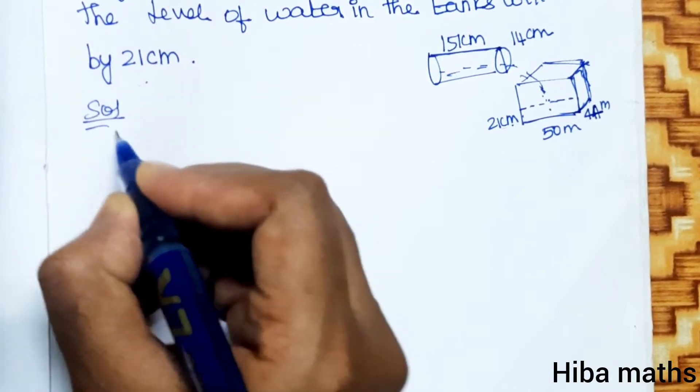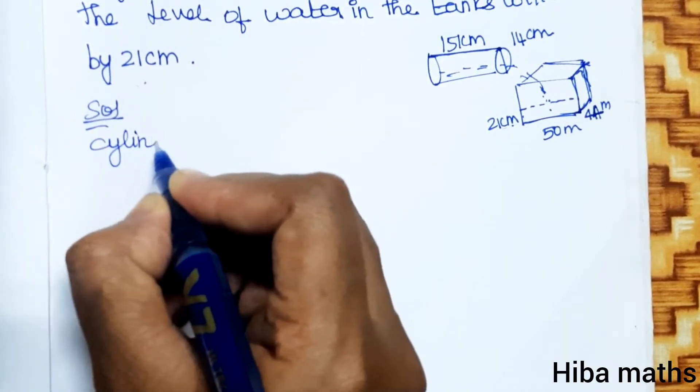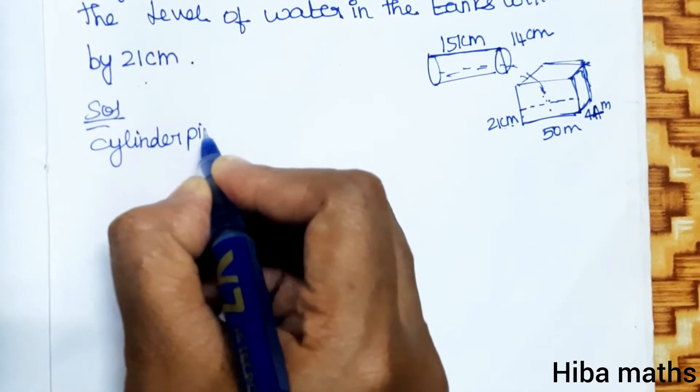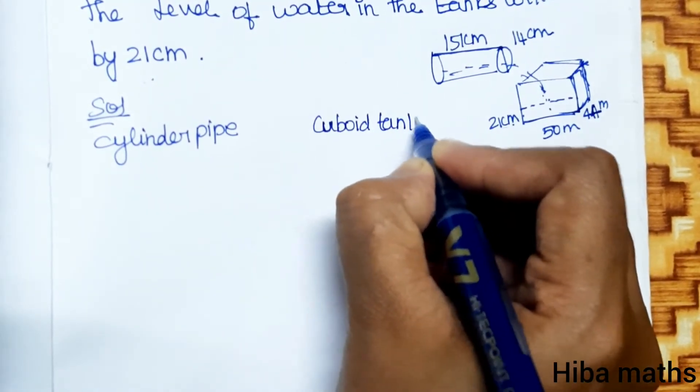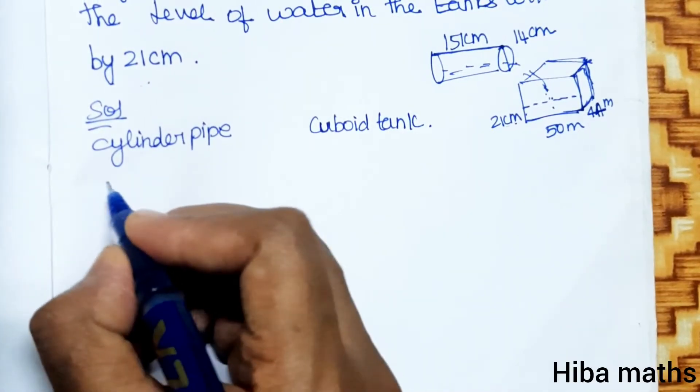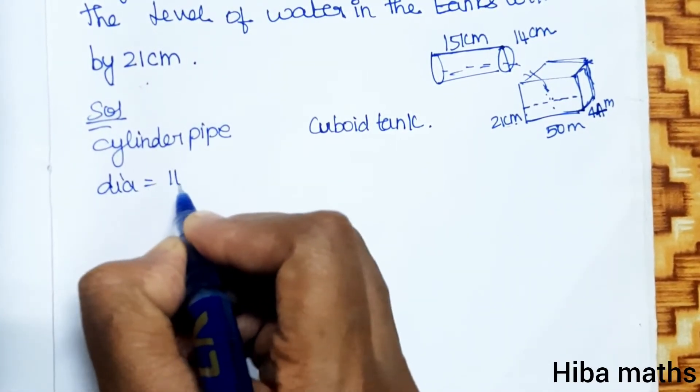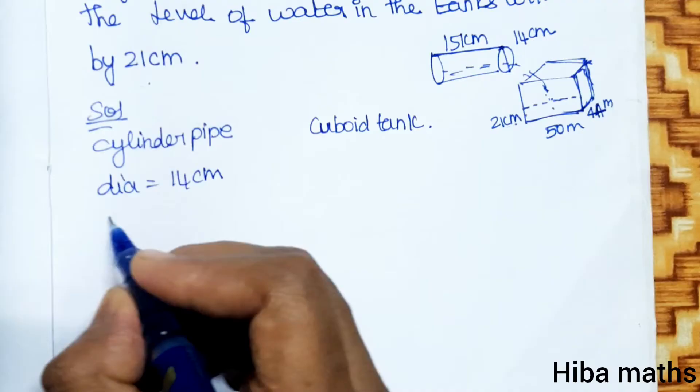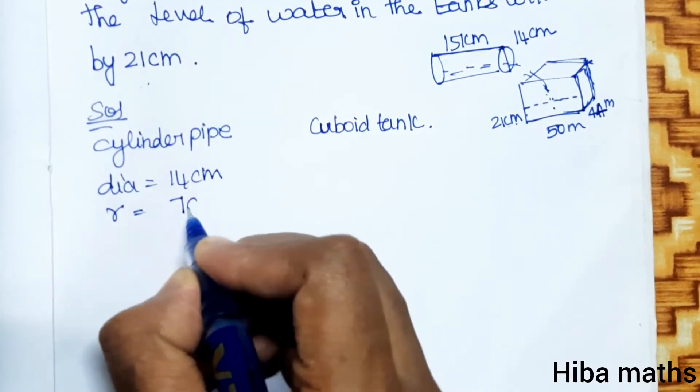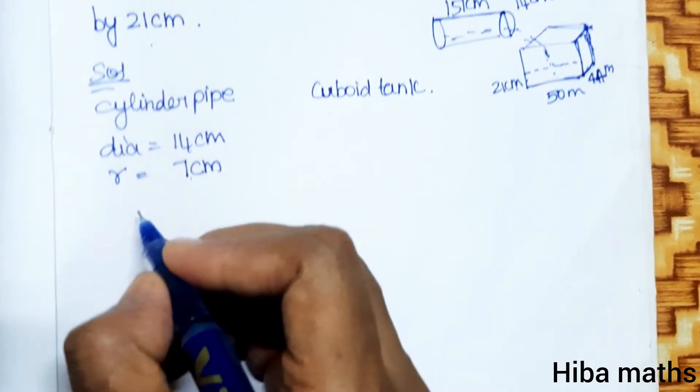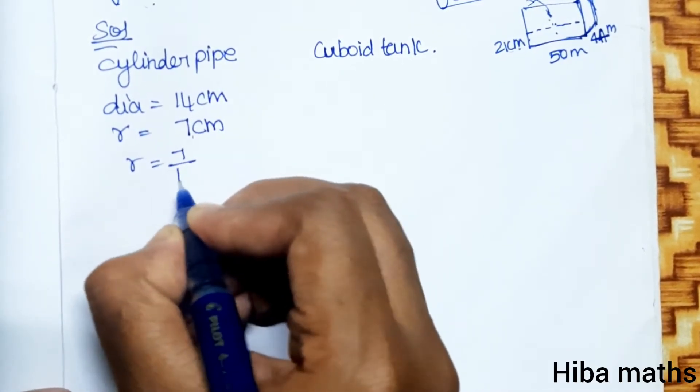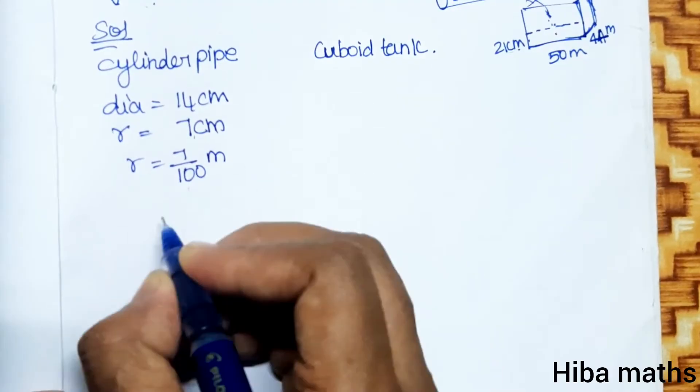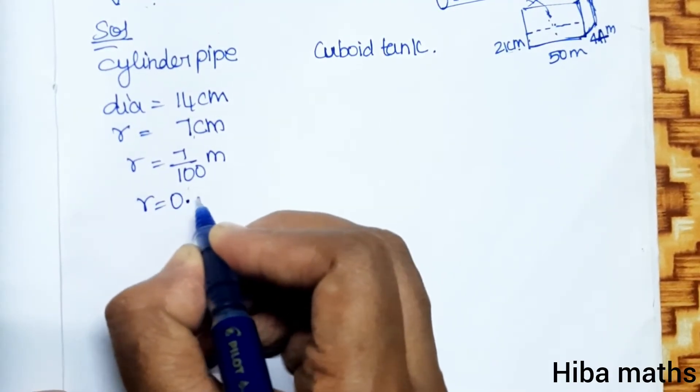Solution: One is a cylinder, that is the pipe. This is a cuboid, that is the tank. Cylinder diameter is 14 cm, so the radius is 7 cm. Now we convert 7 cm to meter: r equals 7 by 100 meter.